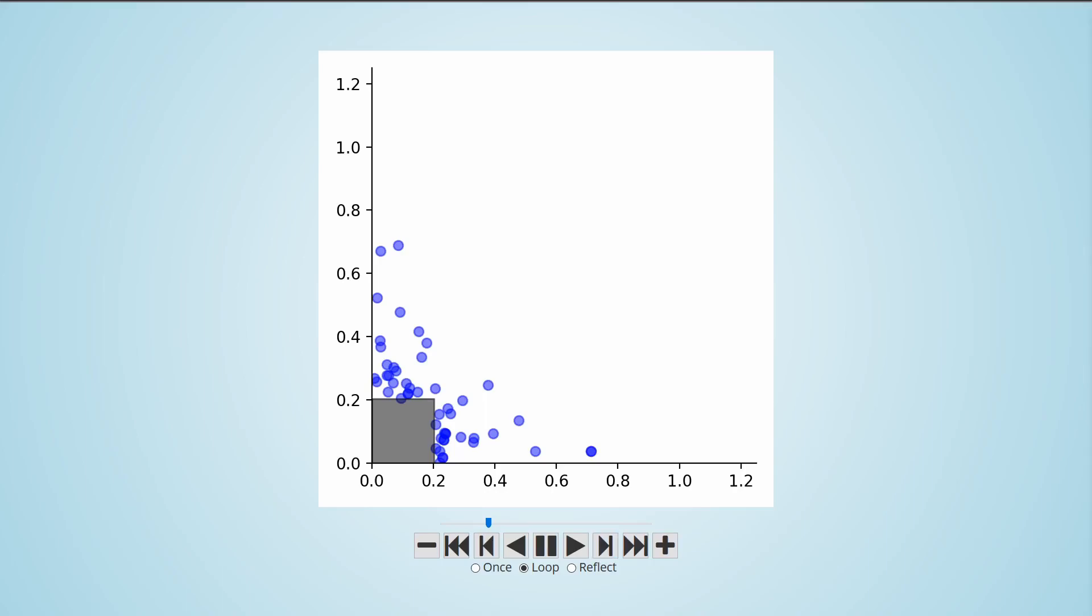So that we end up with 50 points which are approximately distributed like the original distribution, conditional on M being greater than 0.2. This process repeats until we get an estimate for the rare probability that we care about, the probability that M is greater than 1.